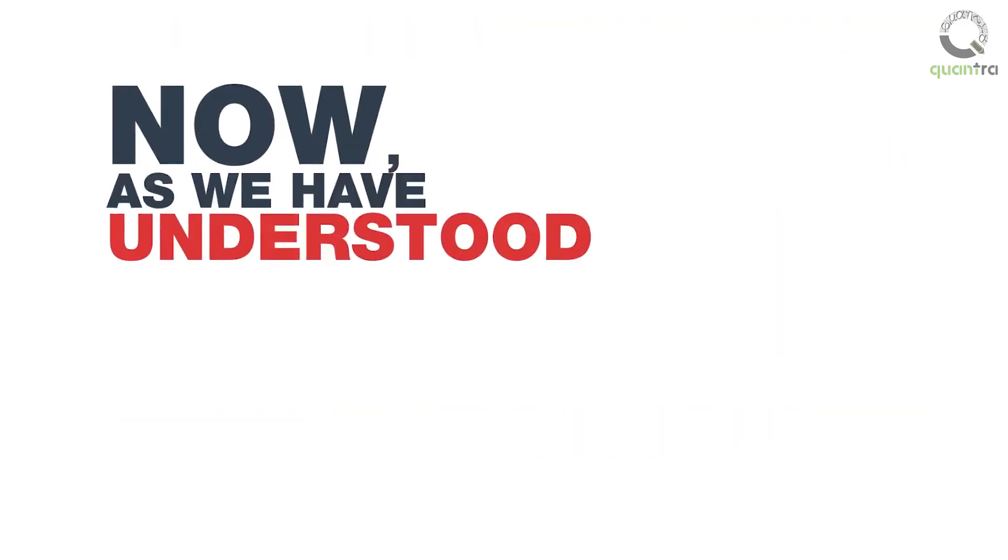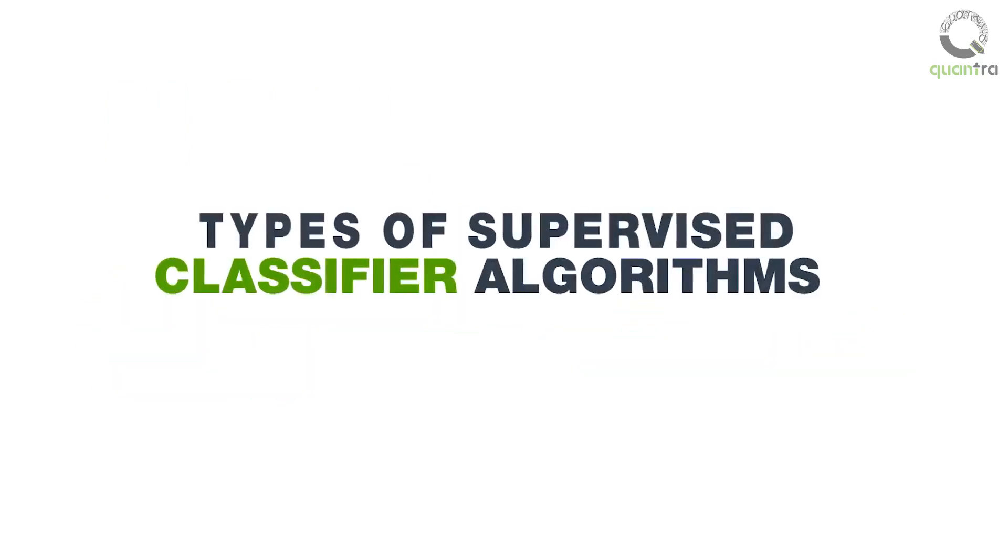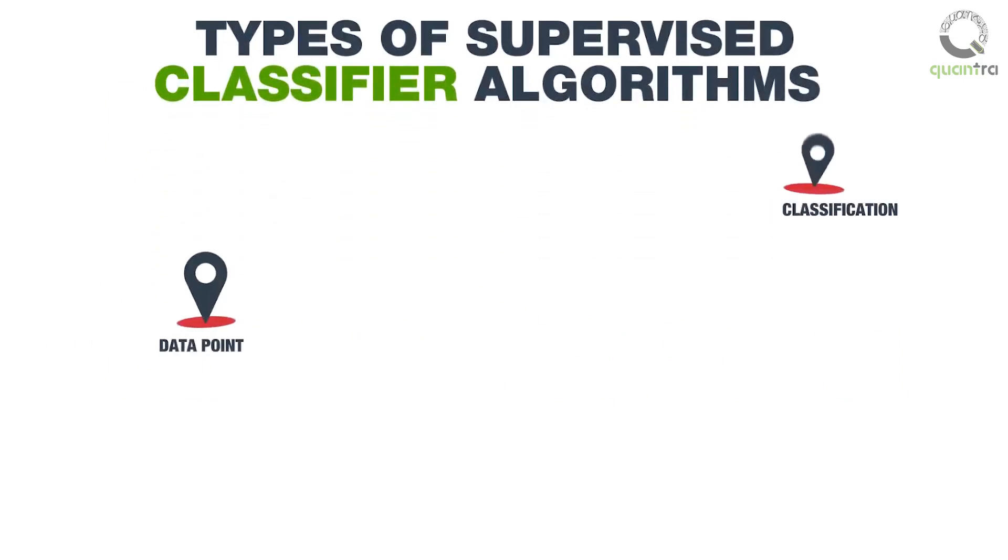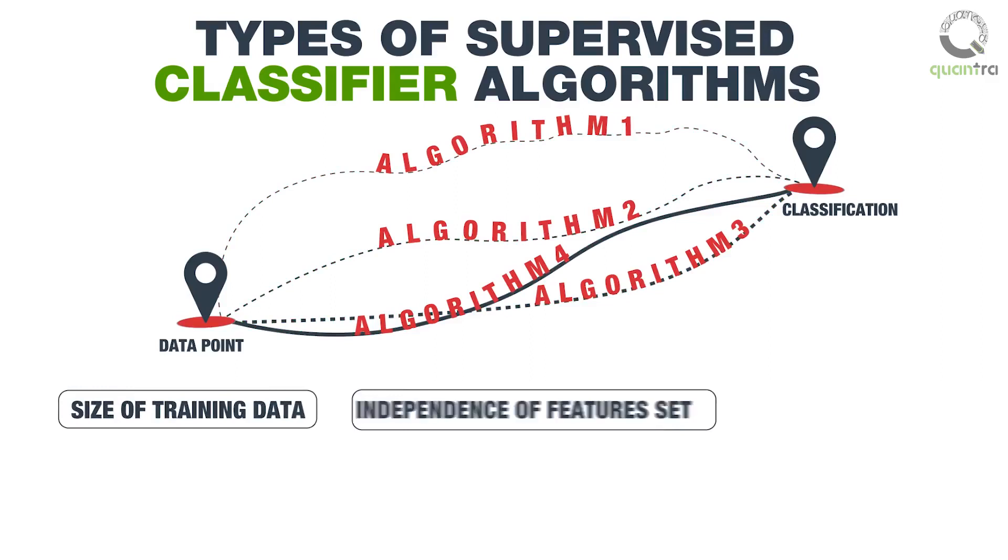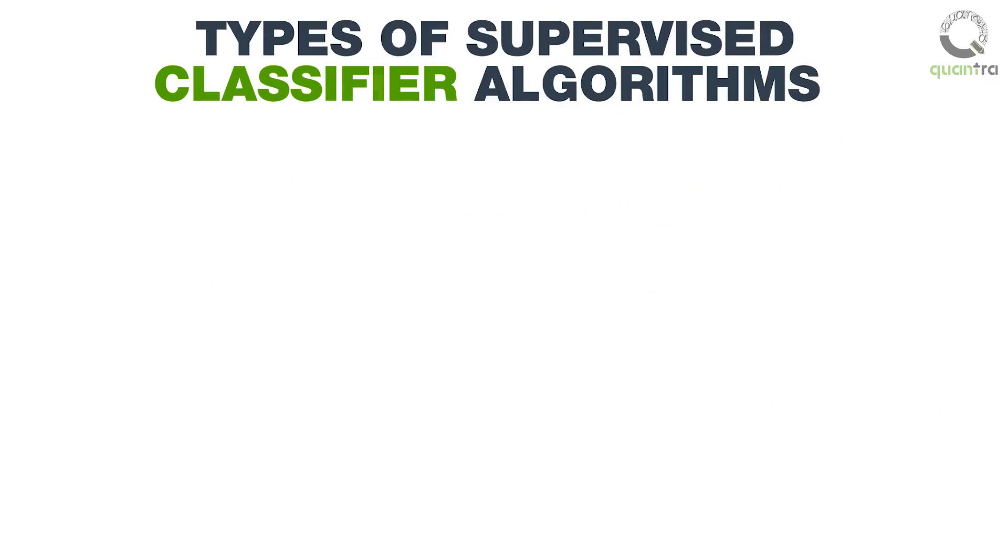Now, as we have understood the basics of classification, let us learn about some types of supervised classifier algorithms. These algorithms employ different approaches to classify the data in predefined categories. Each of these algorithms have some advantages over others, and are chosen based on various parameters, such as size of training data, independence of features set, and system speed among others. The algorithms that we will cover are